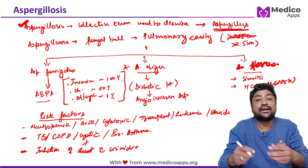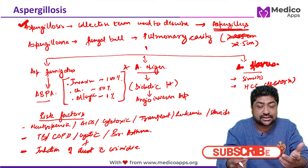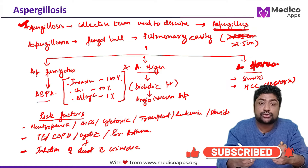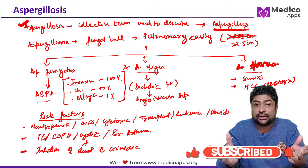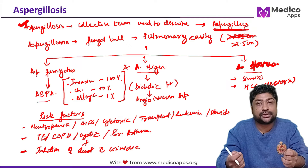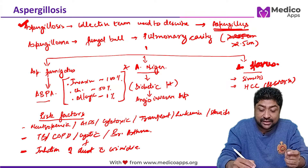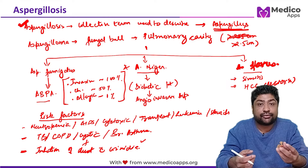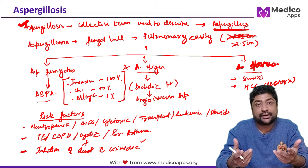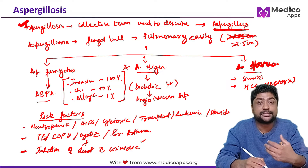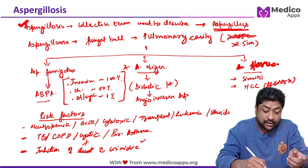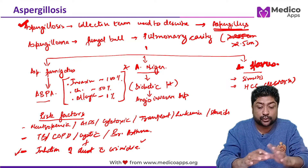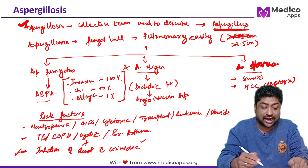The last risk factor is inhalation of dust containing conidia. During COVID, we saw increased incidences of fungal infections because bedsheets and hospital wards and ICUs were not properly cleaned, leading to higher amounts of conidia in the air. In immunocompromised patients on drugs, this further increased the risk of fungal infections.